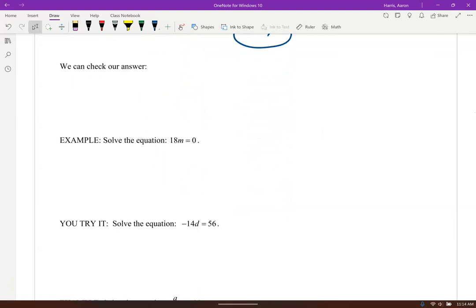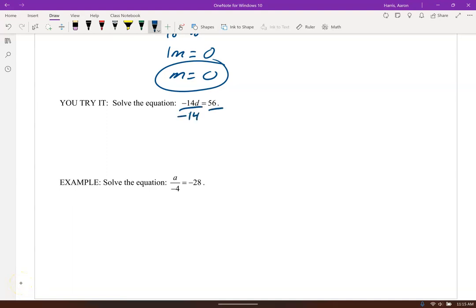Here, we're going to divide by 18 both sides. 18 over 18 is 1m. So m equals 0 divided by anything is 0. Here we got negative 14d equals 56. What are you guys going to do? Go ahead and just punch it into the chat there. What you would do, number 1, what is your step? And number 2, what is your solution? Dividing by negative 14 on both sides gives us negative 4.